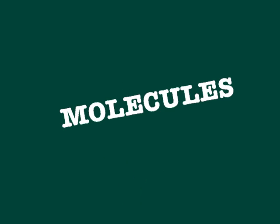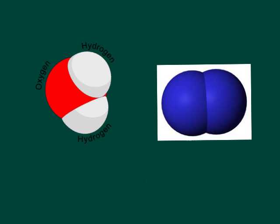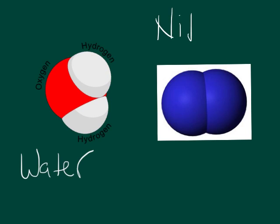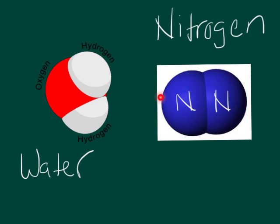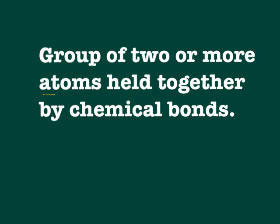We're going to take a look at molecules first. Take a look at these two pictures — they're both considered to be molecules. This one over here is a molecule of water; you'll notice there's one oxygen and two hydrogen. This one over here is nitrogen — these are both nitrogens, both the same element or atom. Molecules can either be different or they can be the same. They're a group of two or more atoms held together by chemical bonds, which is that attraction to each other that holds those atoms together.